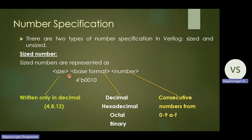Sized numbers are represented using the following syntax: size, tick, base format, then the number. The size specifies how many digits of values we can use in the program. Size is written only in decimal numbers — for example, 4, 8, 12, 16, or 32 digits.